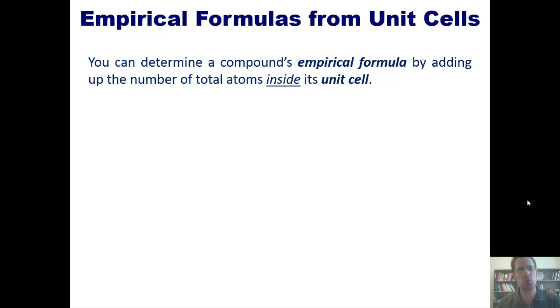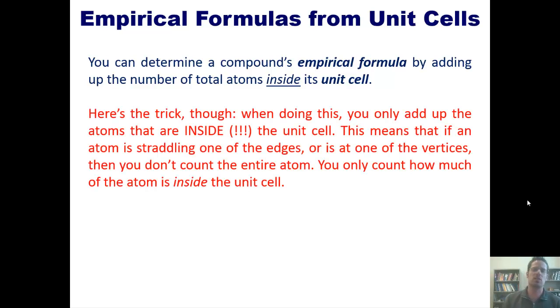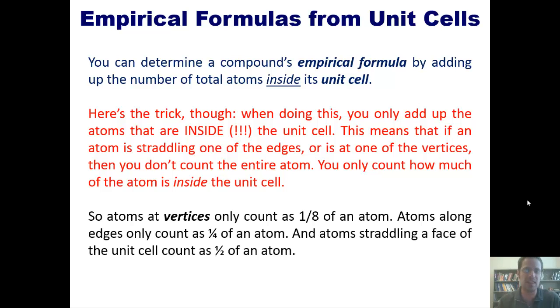Now we move on to another subject. You can actually determine a compound's empirical formula from its unit cell by adding up the total number of atoms that are inside the unit cell. Here's the trick though: when doing this, you only add up the atoms that are inside the unit cell. This means that if an atom is straddling one of the edges or at one of the vertices, then you don't count the entire atom. You only count whatever fraction of the atom is actually inside the cell. So atoms at vertices only count as one-eighth of an atom. Atoms along edges only count as one-fourth, and atoms straddling a face count as one-half.